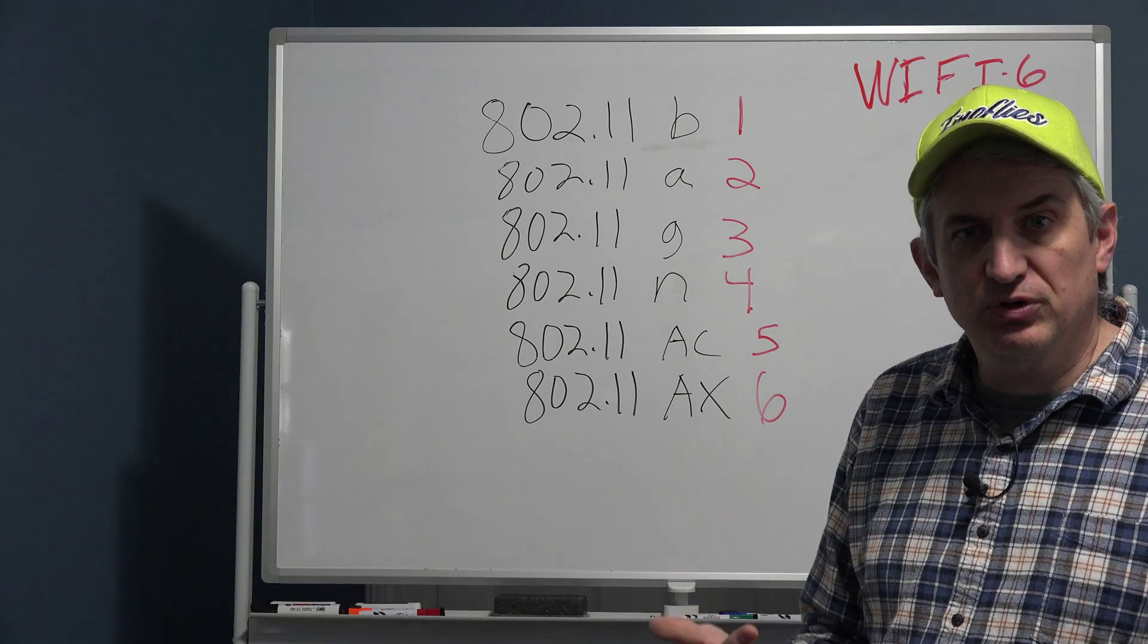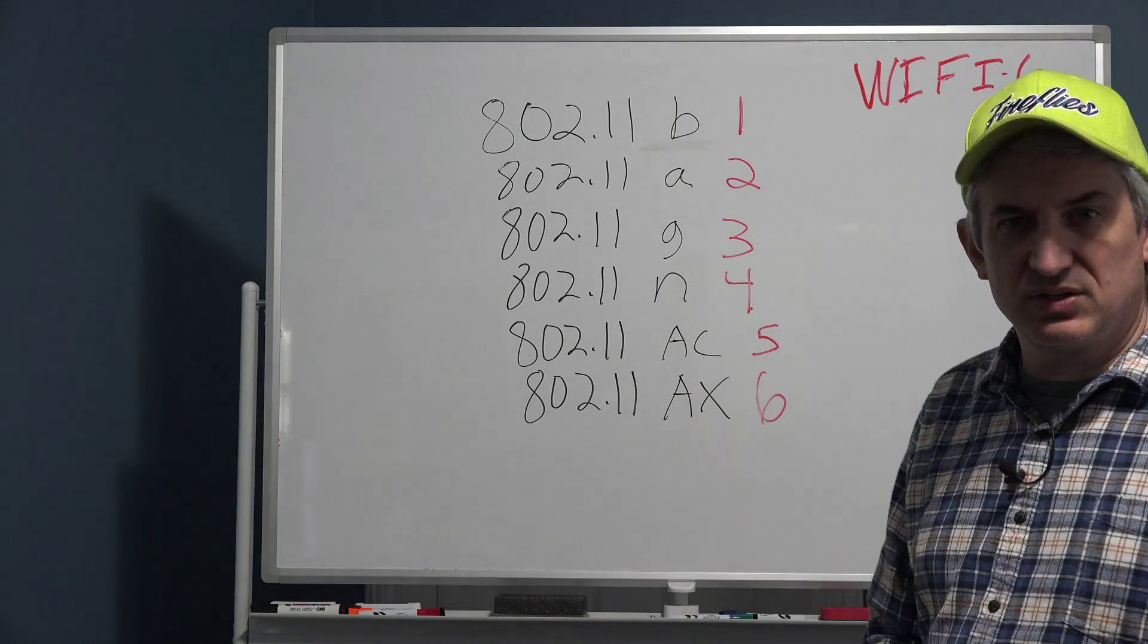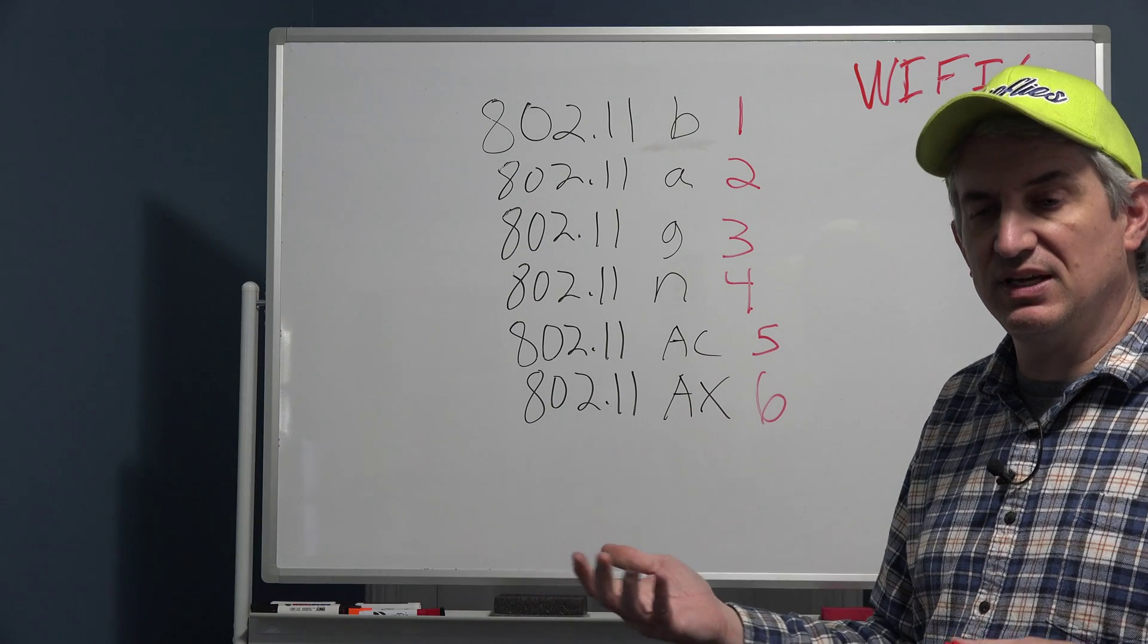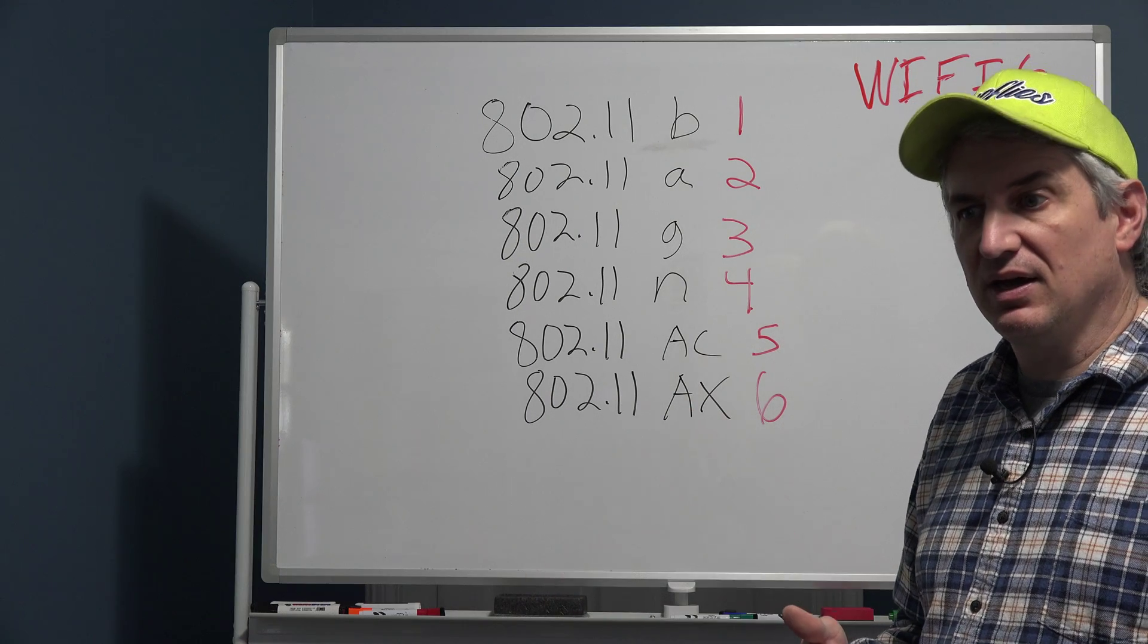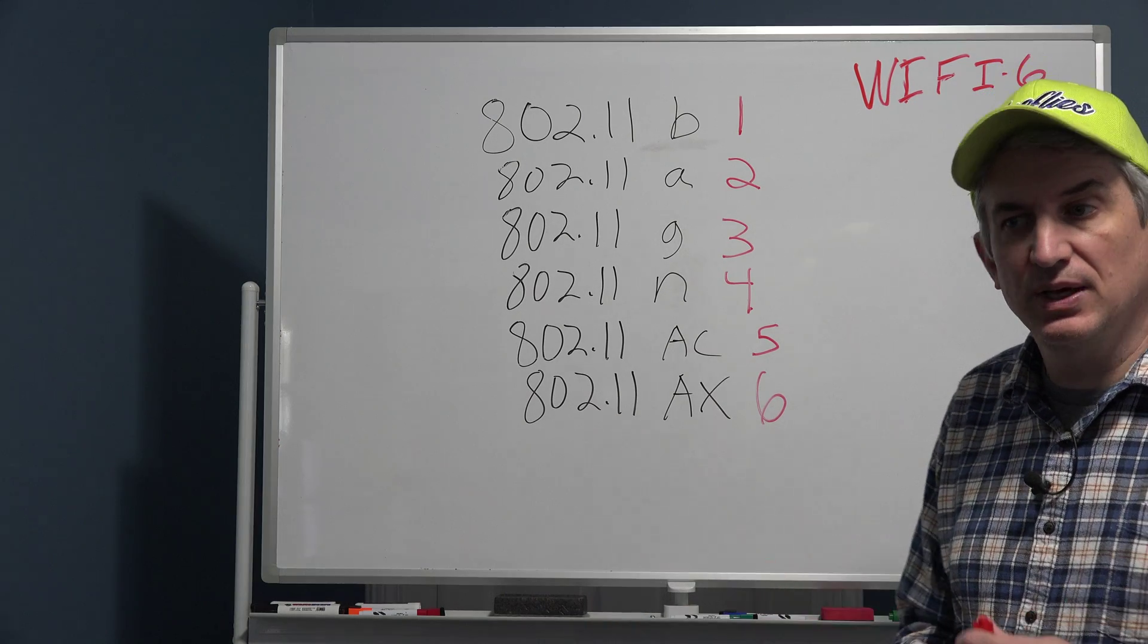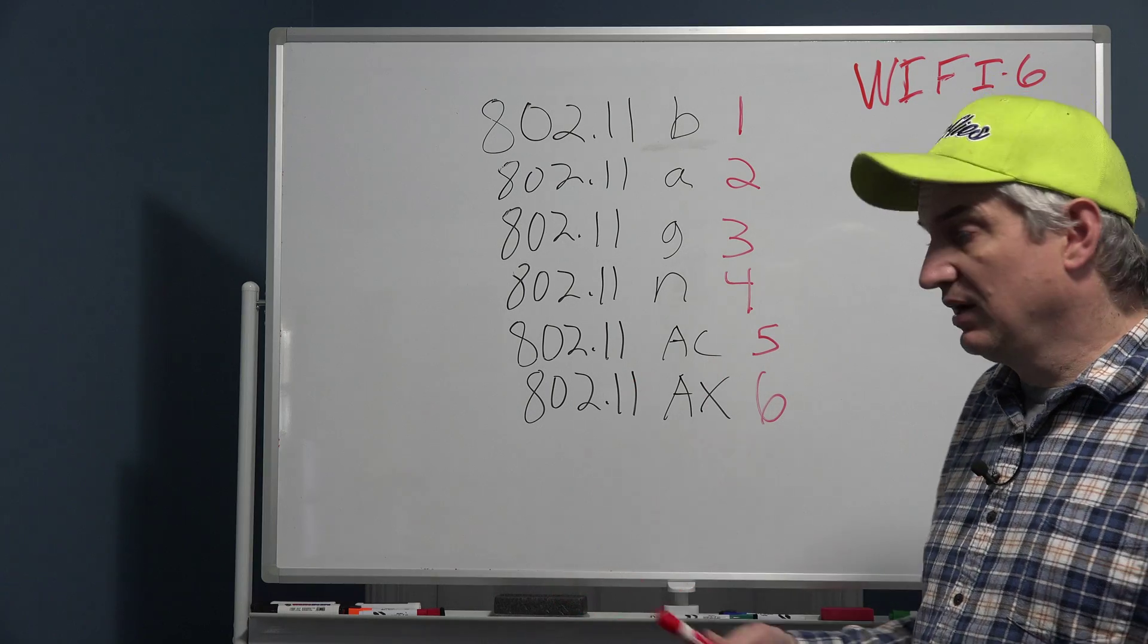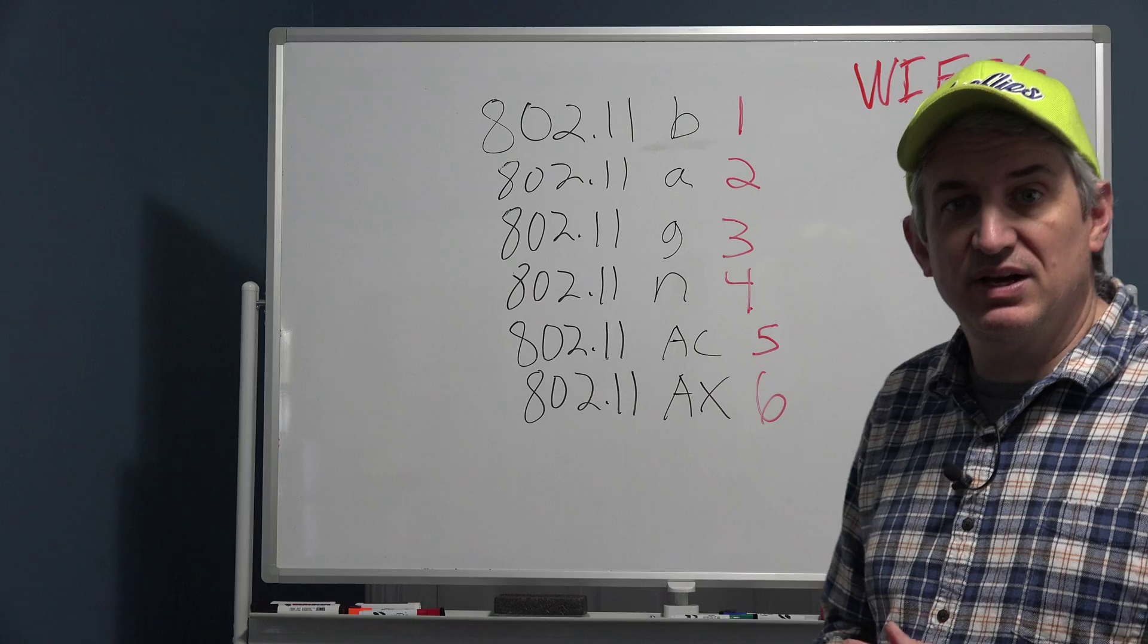Most homes now have tons and tons of WiFi devices: your TV, your Apple TV, your alarm system, your phones, your tablets, laptops, thermostats, lighting, smart lighting. So there's all kinds of WiFi devices.